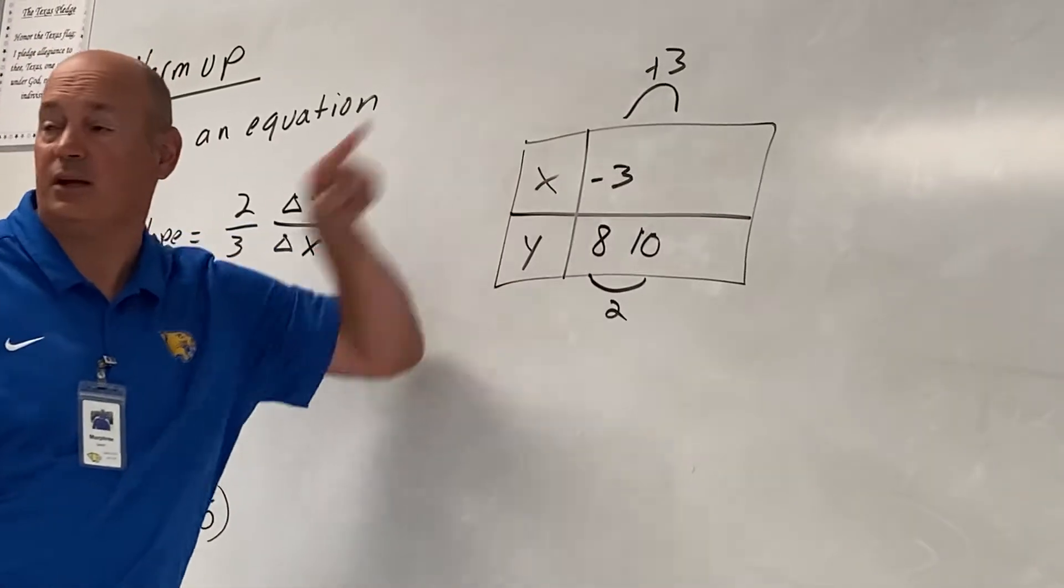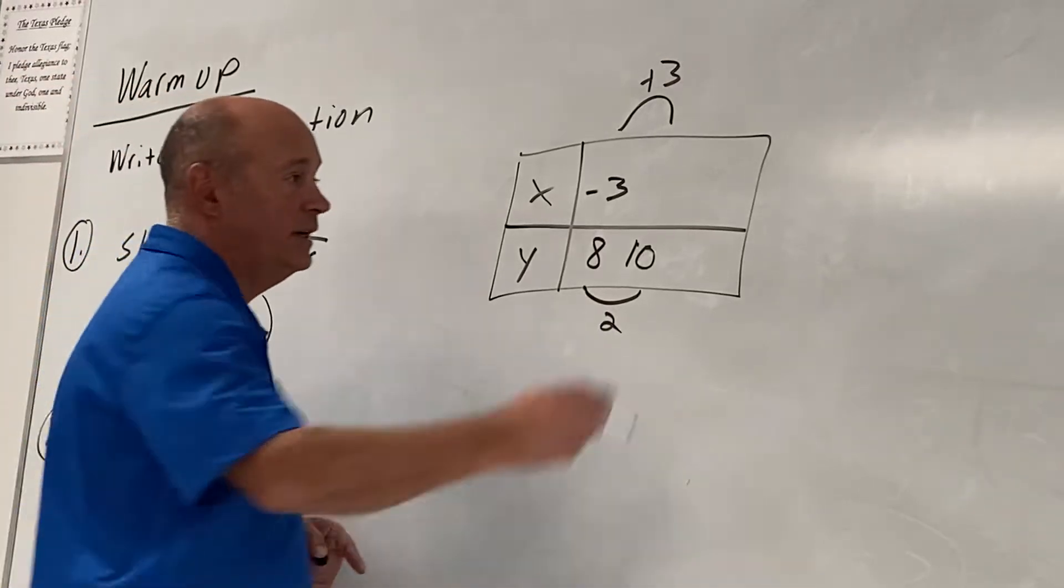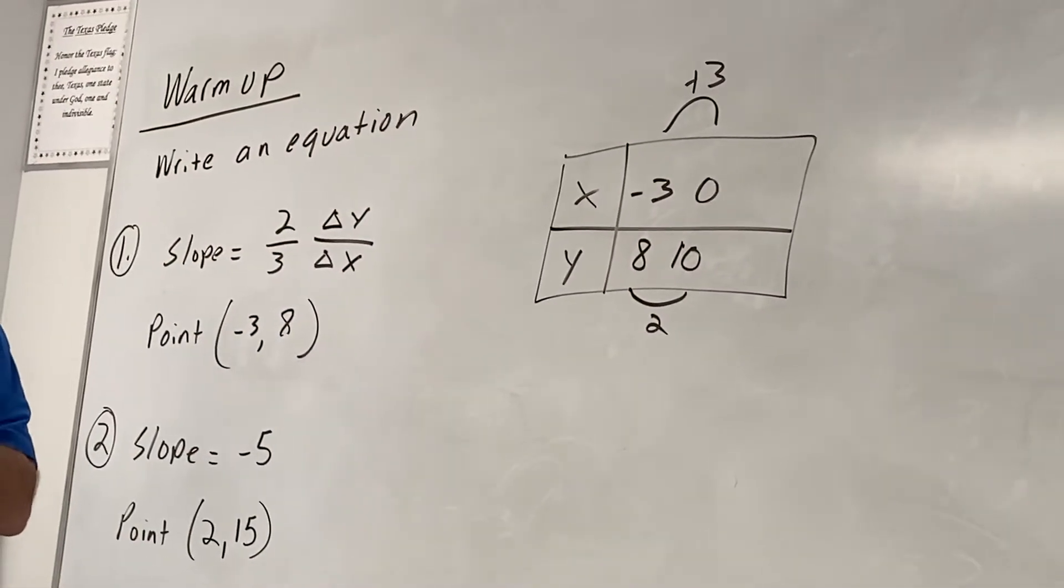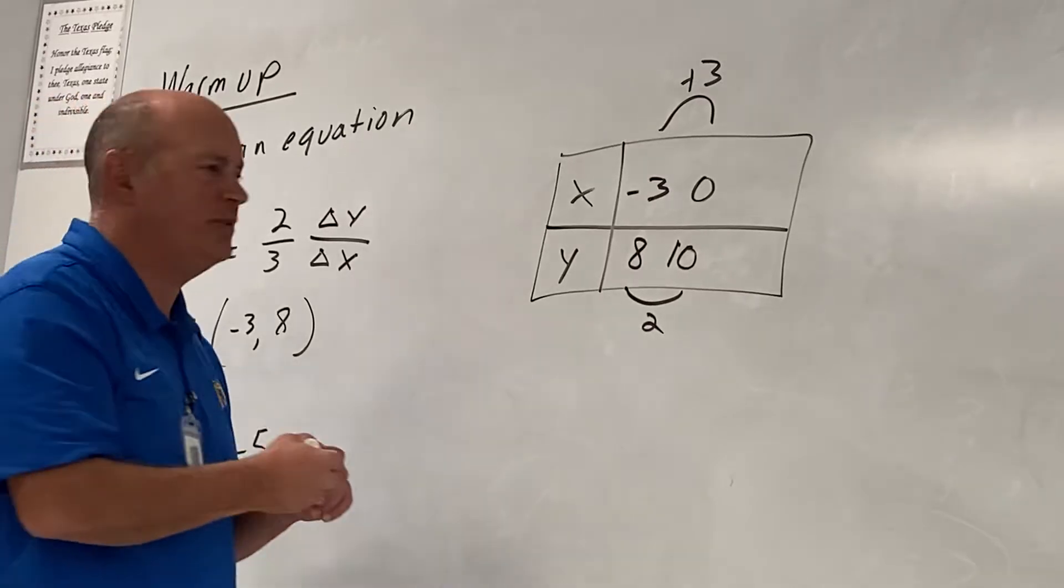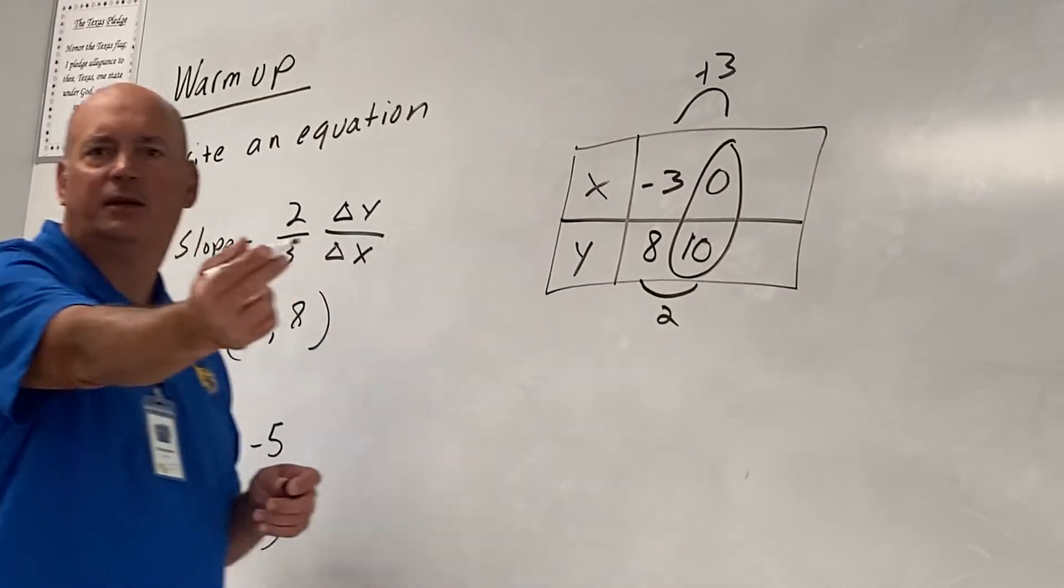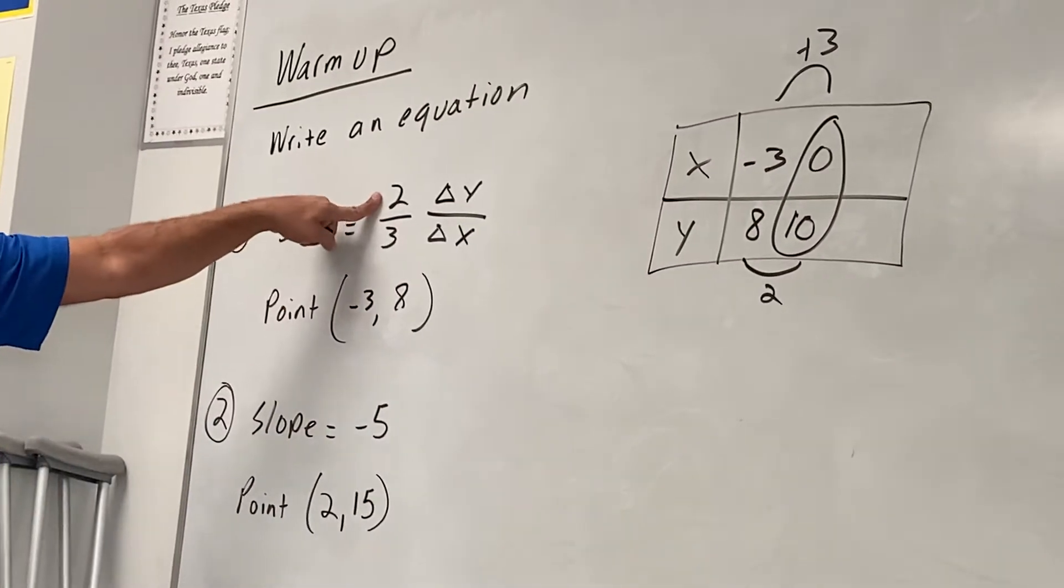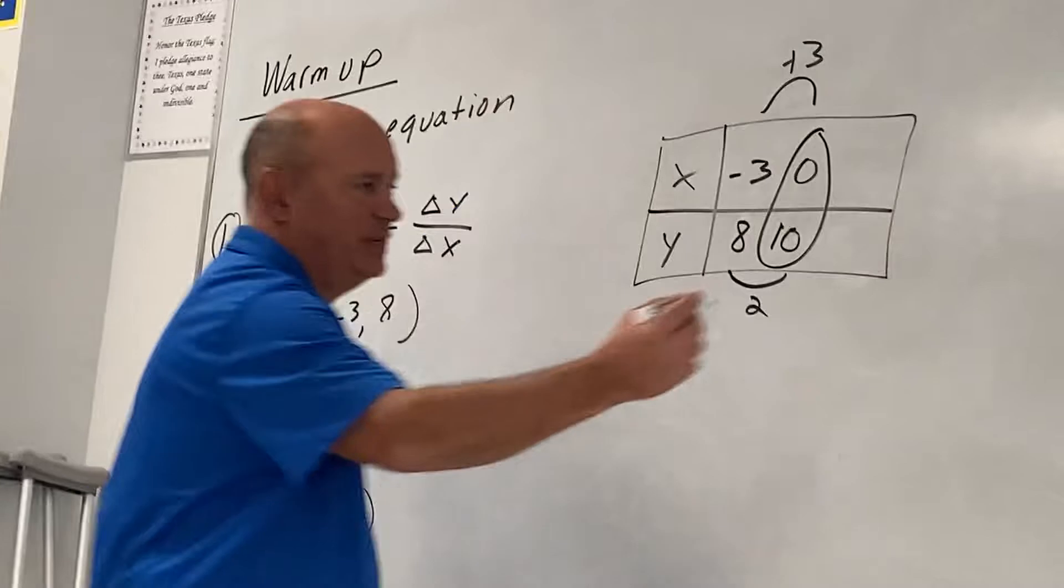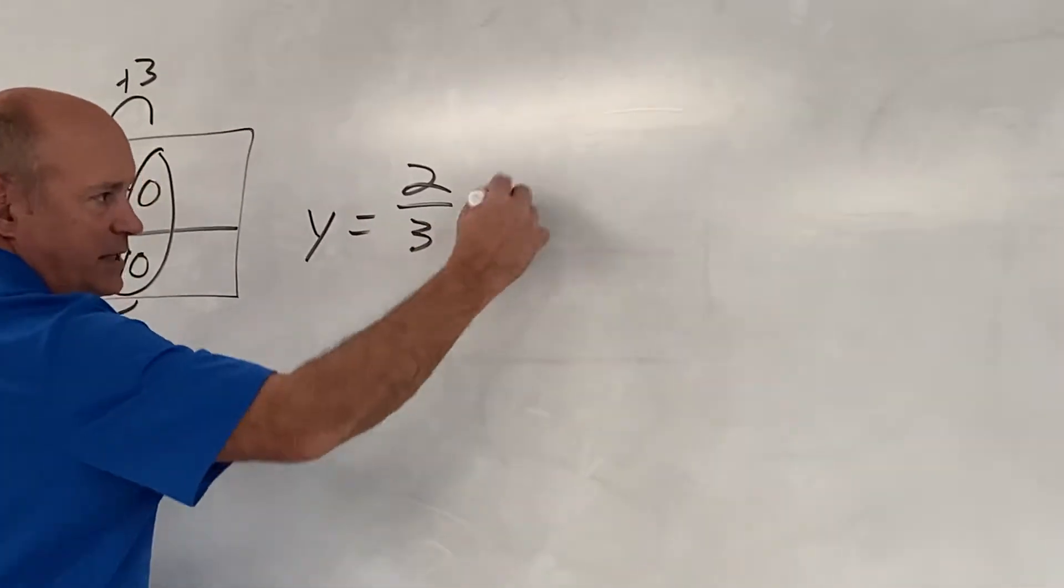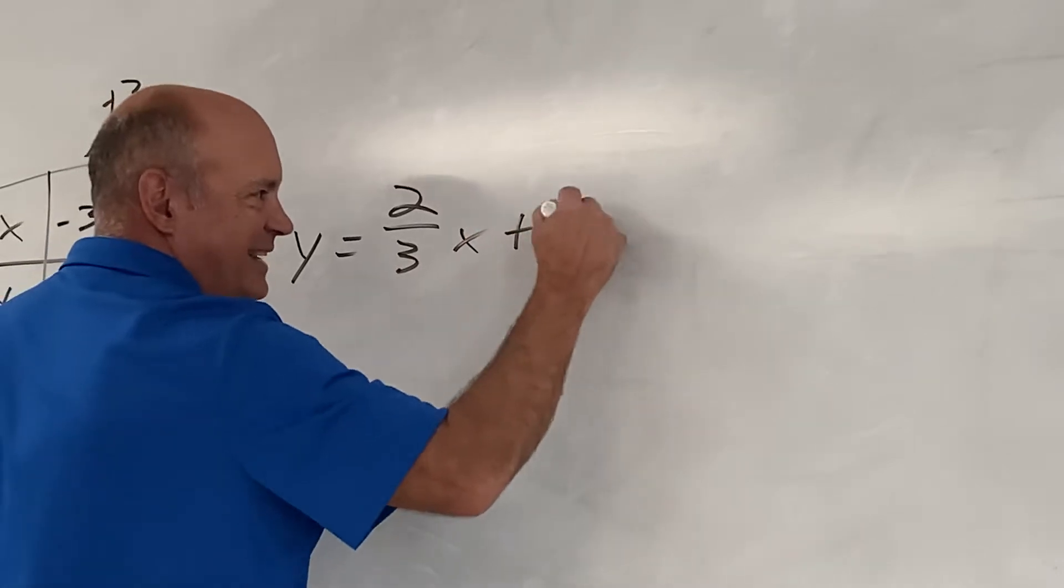What's the next number in my table? What's negative 3 plus 3? Zoe? Isn't 0 the number we're looking for in the table? Yes. So what is my y-intercept? 10. Is everybody with me? Now we know the y-intercept. Don't we already know the slope? Yes. Let's write the equation. What is it? y equals 2/3 x plus 10. We're done.